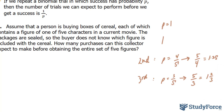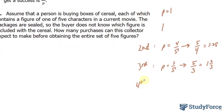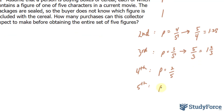In the fourth purchase, the probability becomes 2 over 5. And in the fifth purchase, for the same reason as explained earlier, the probability is 1 in 5. Reciprocating that, we get 5 over 2, which is equivalent to 2.5. And reciprocating this last fraction, we get 5.